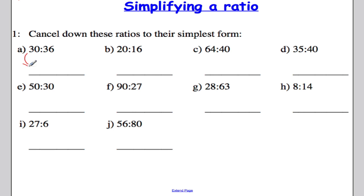So I'm going to divide both sides of the ratio by 6. And 30 divided by 6 gives me 5. And 36 divided by 6 gives me 6. So this ratio, cancelled down to its simplest form, is 5 to 6. And that's all there is to it.